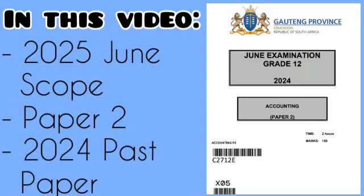In this Grade 12 Accounting video, we are looking at the 2025 June examination scope specifically for Paper 2, and we are going to go through it referencing past 2024 question papers. The reason for this is it has come to my attention that some of you who are upgrading may not know what falls under some of these topics, so this is just to make it easier for you to know what you can expect under every single one of these topics.